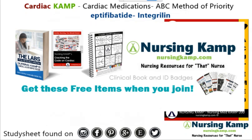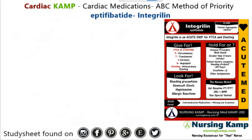Today's focus is on this sticky note: Integrilin, a GP2b3a inhibitor. It's an acute medication — a critical drip given generally during PTCAs, stenting, and MIs, specifically non-ST elevation MIs, so NSTEMIs.